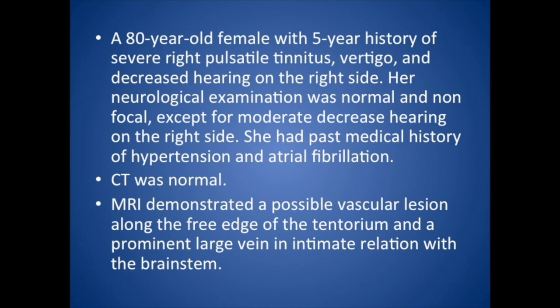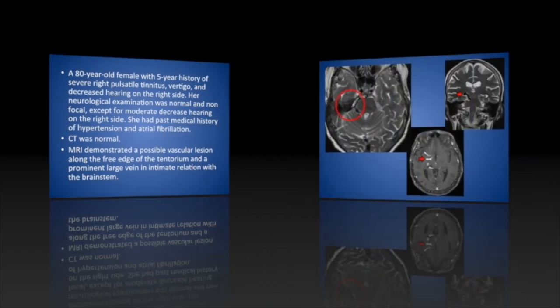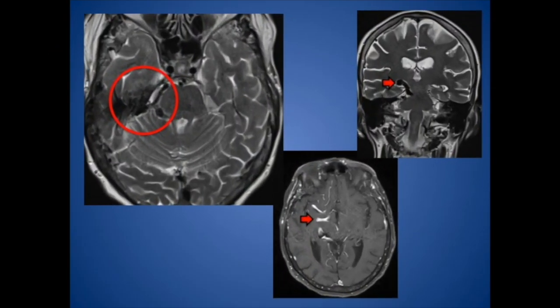CT was normal. MRI demonstrated possible vascular abnormality of the right free edge of the tentorium, with a draining vein showing some compression of the brain stem. The patient went on to diagnostic angiography revealing a large tentorial AV fistula.